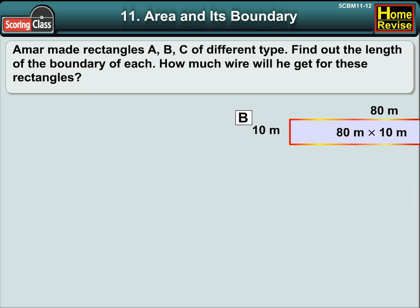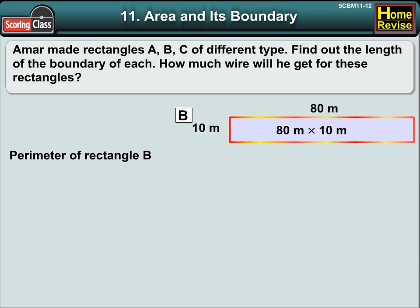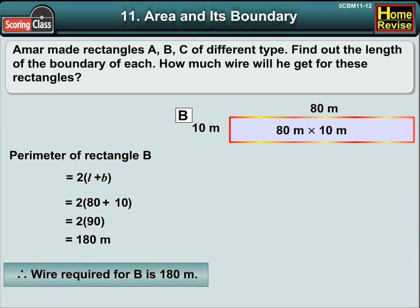Now let's find out for B. Perimeter of rectangle B is 2 into length plus breadth. If we put in the values, it is 2 into 80 plus 10, which is equal to 2 into 90. This is equal to 180 meters. Therefore wire required for B is 180 meters.